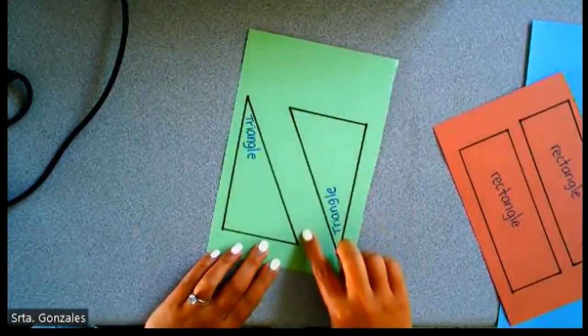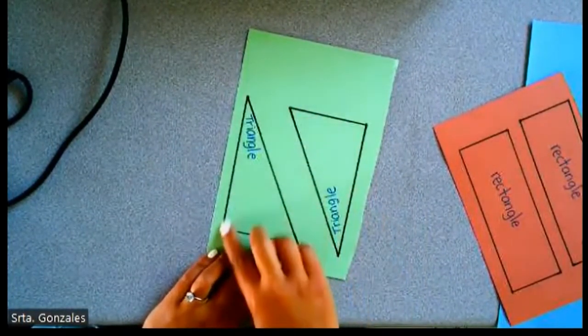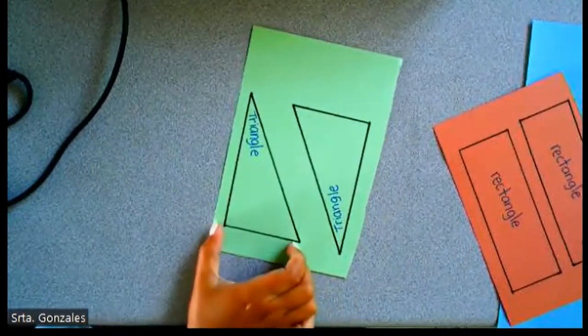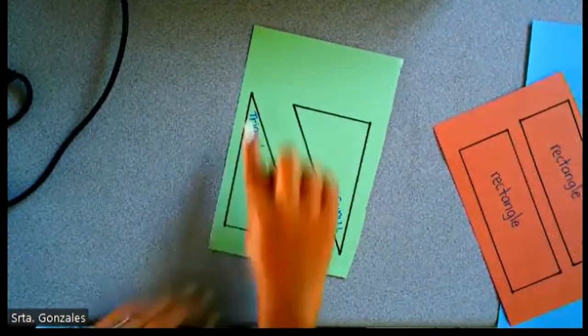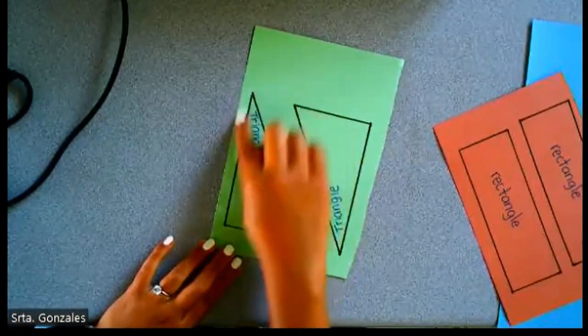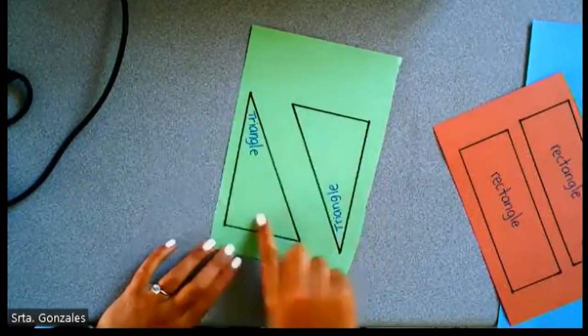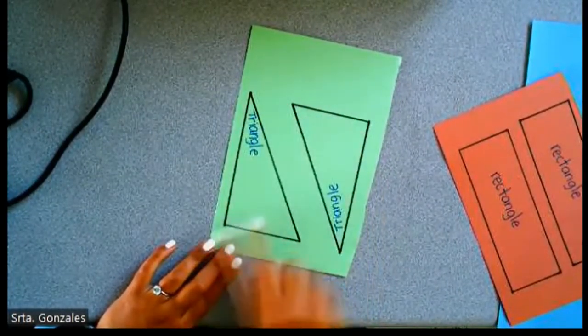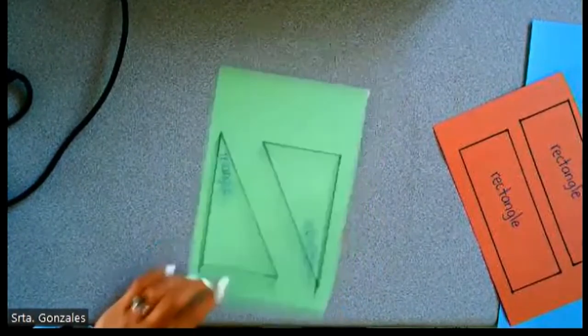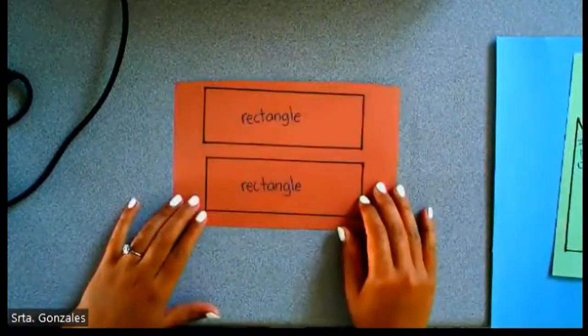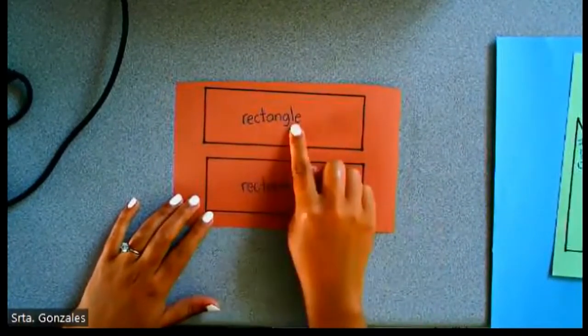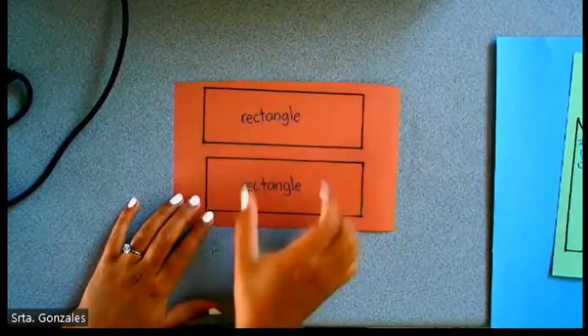Long side, long side, short side. Write triangle where the long sides meet, not in the short side. Write rectangle in the middle of the rectangle.